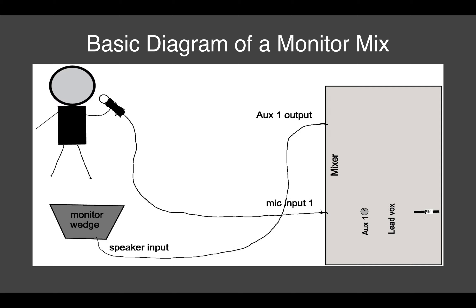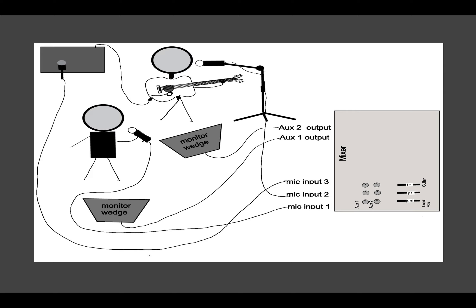Here's a basic diagram of a monitor mix that I drew. We have one singer coming in on channel one, and one wedge that's being fed by aux output one. When the singer wants to hear his vocals, I'm going to go to his channel — labeled lead vocals — and raise aux one until he can hear himself out of his wedge. It's that simple.